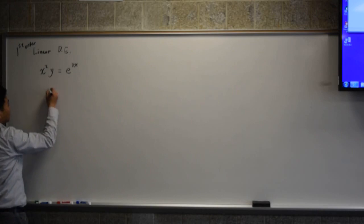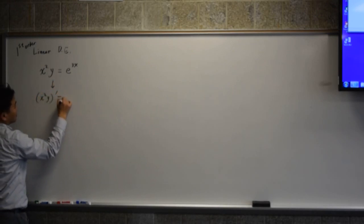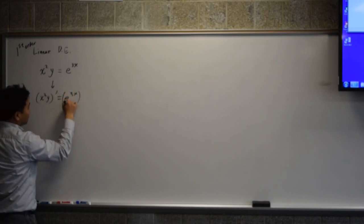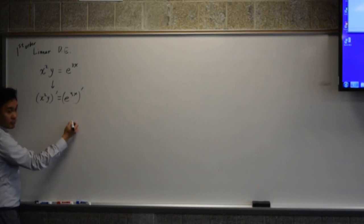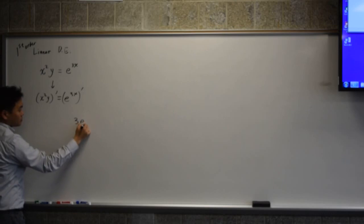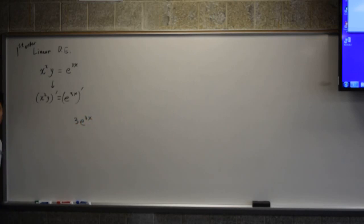All right, once again, we differentiate both sides. This side is easy, what is it? 3e to the 3x by chain rule.